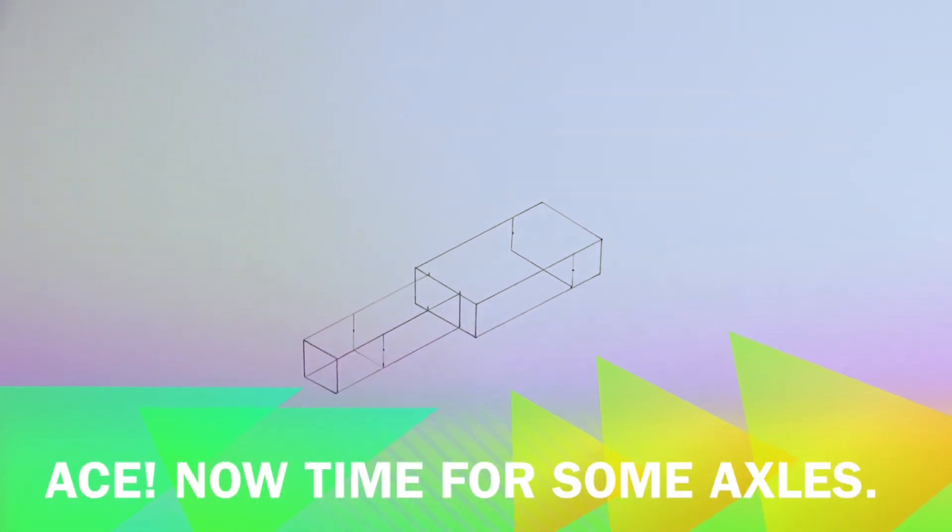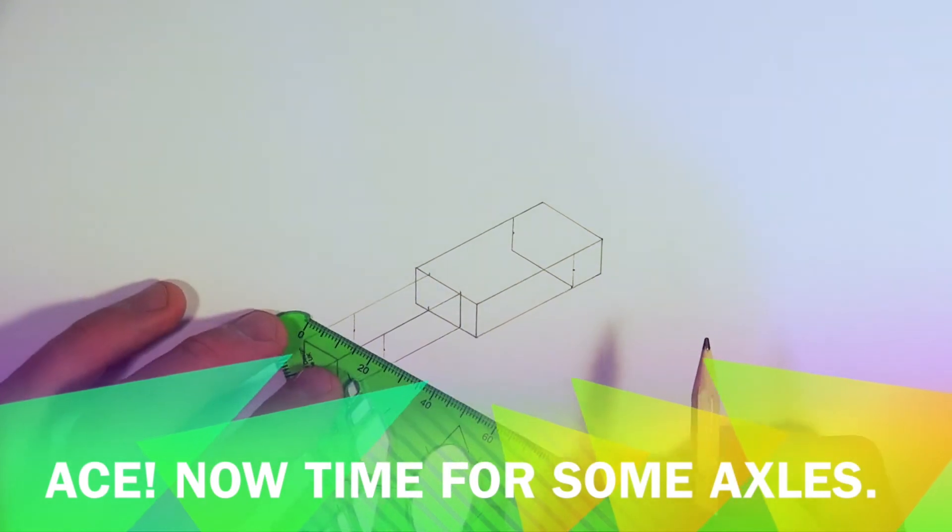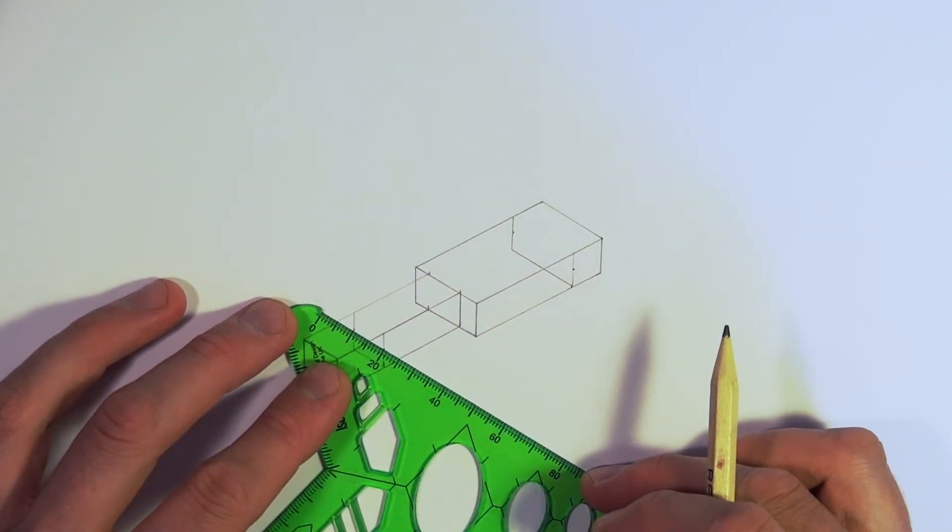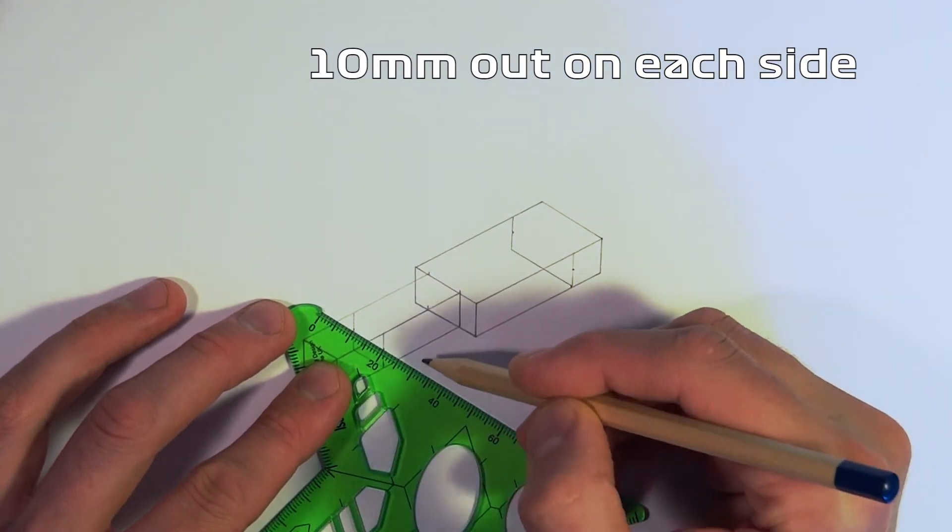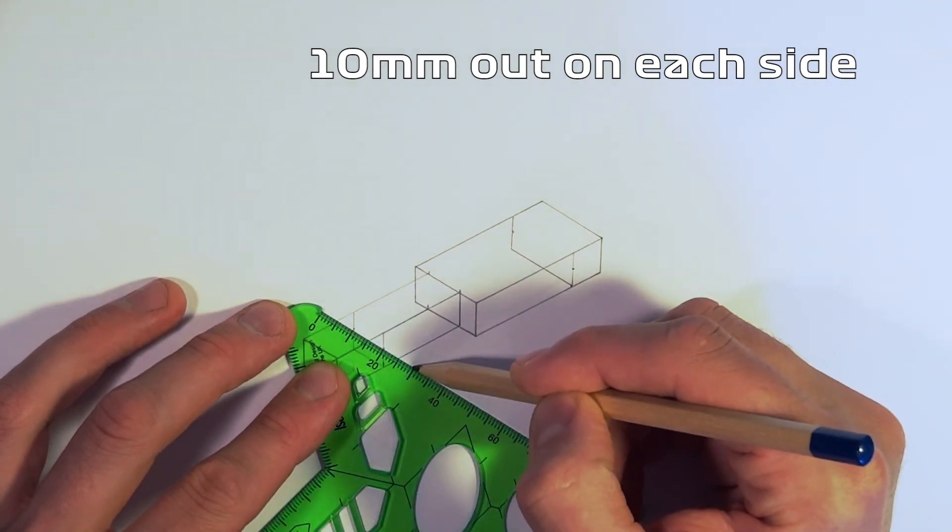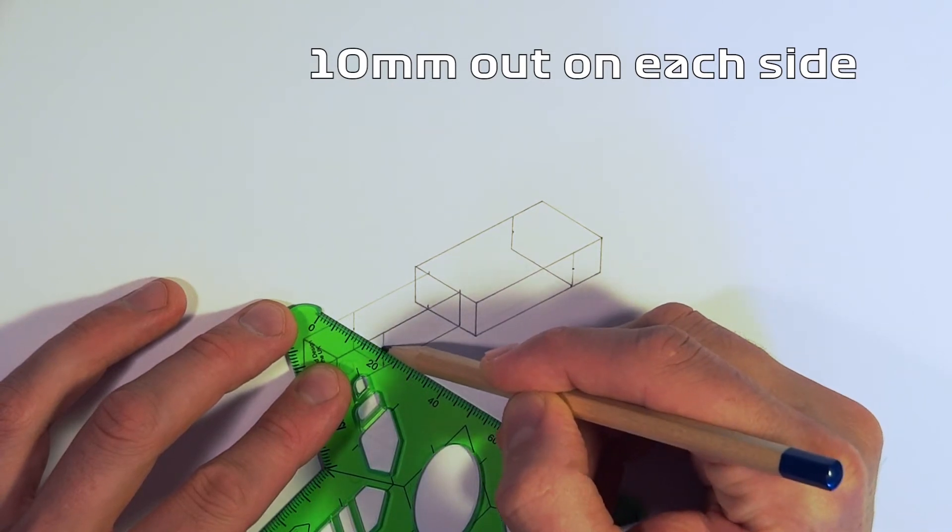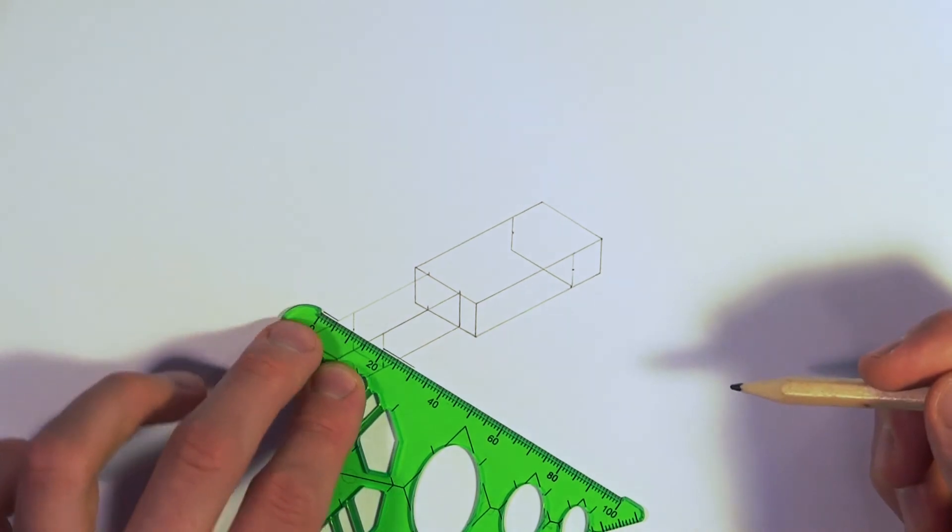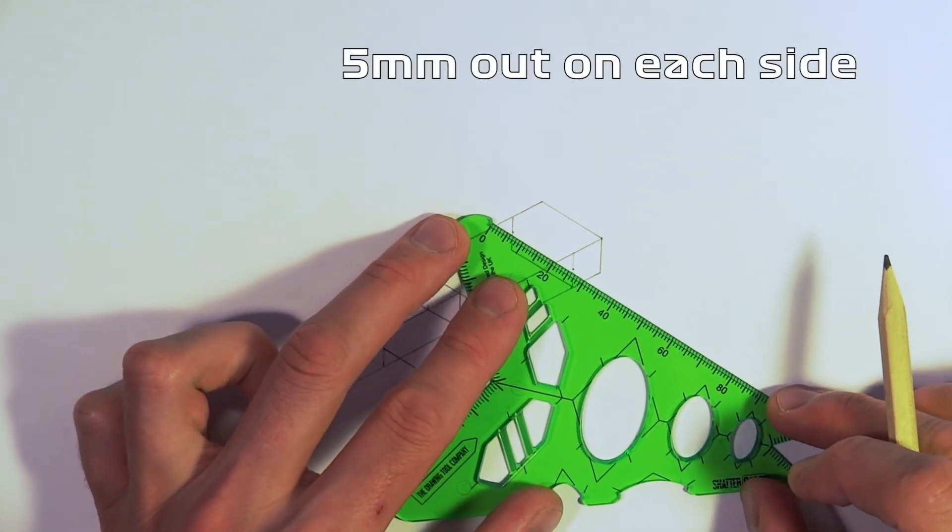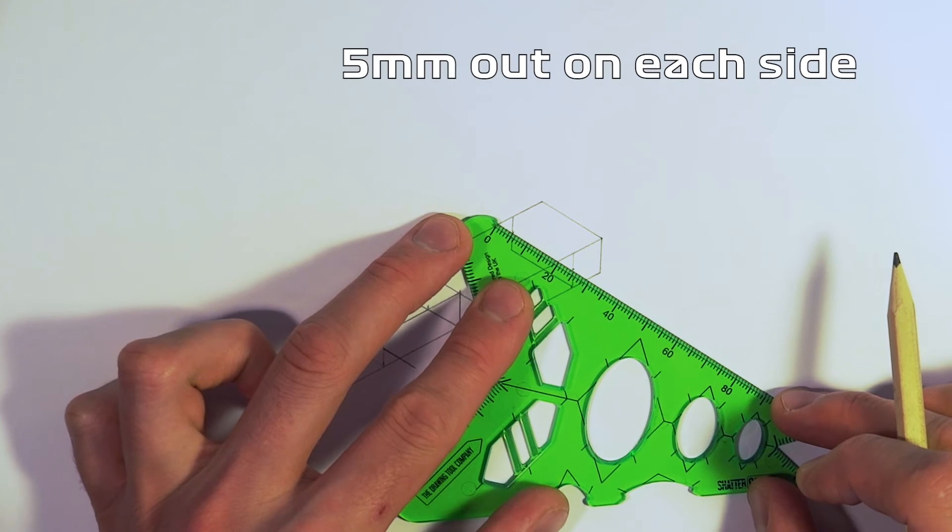Now time to draw our axles on. So position the ruler so that you've got one of the centimeter or the bigger markings next to your dots, and we're going to mark 10 millimeters out from each side of the chassis. So using the ruler, marking 10 millimeters out, and that will look a little bit like that.